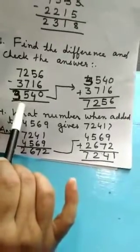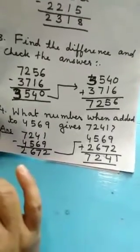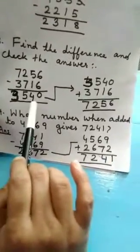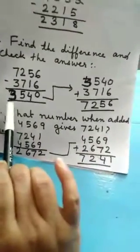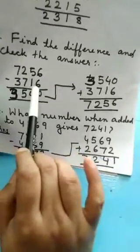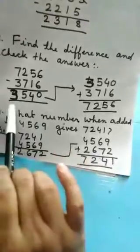Now, how you will know that your answer is correct? This way. You add this number. The answer which is coming. 3,540 plus 3,716.